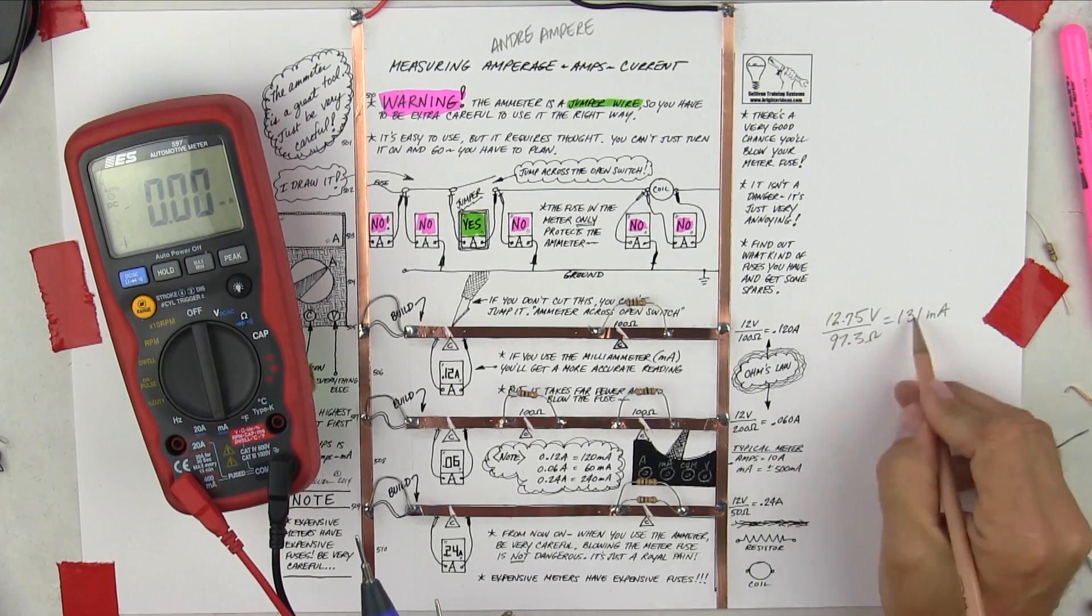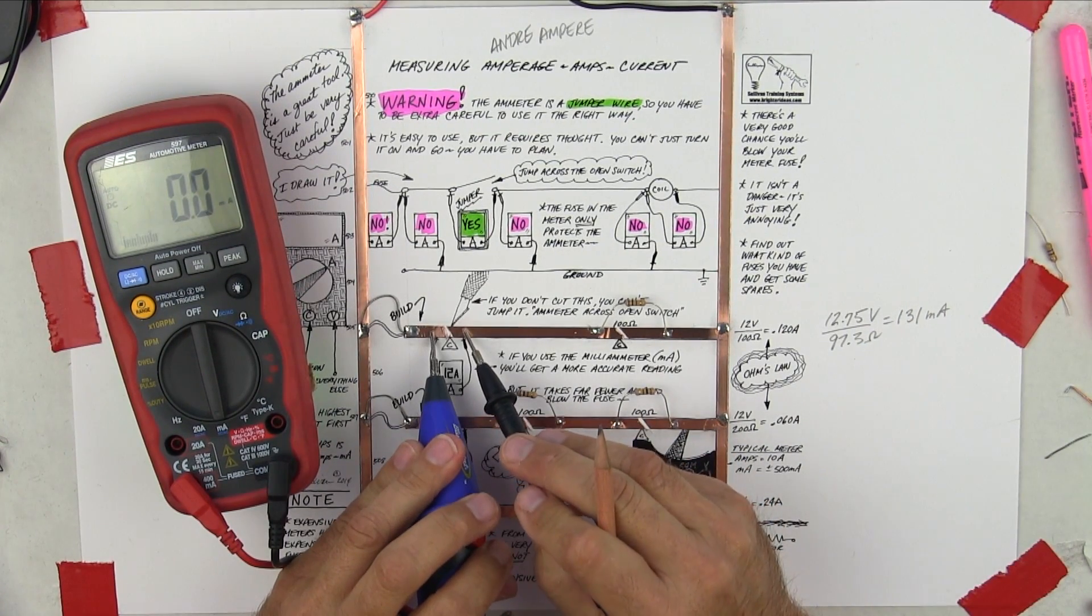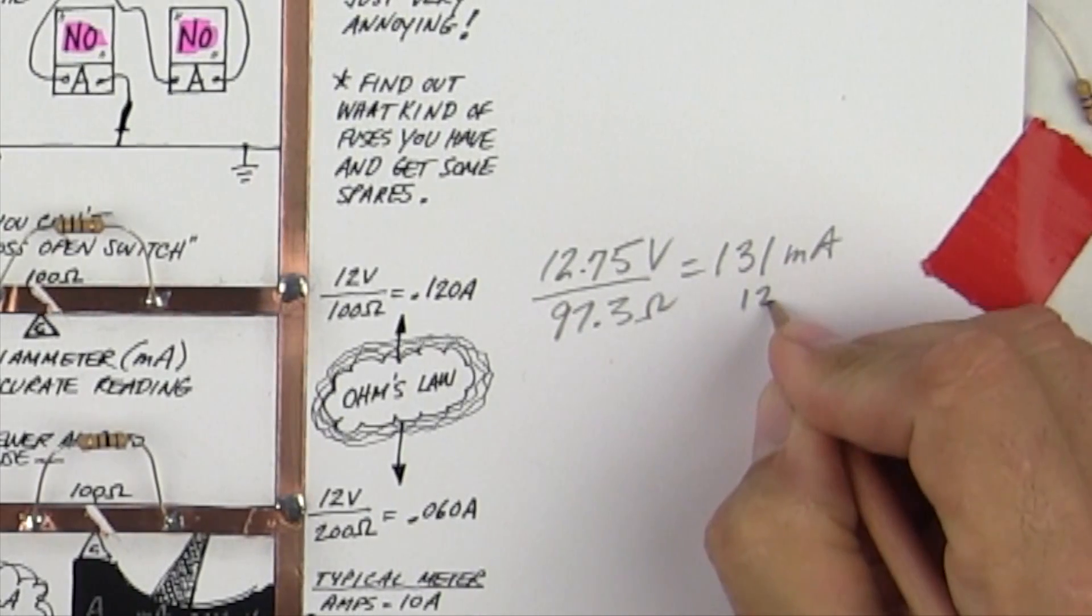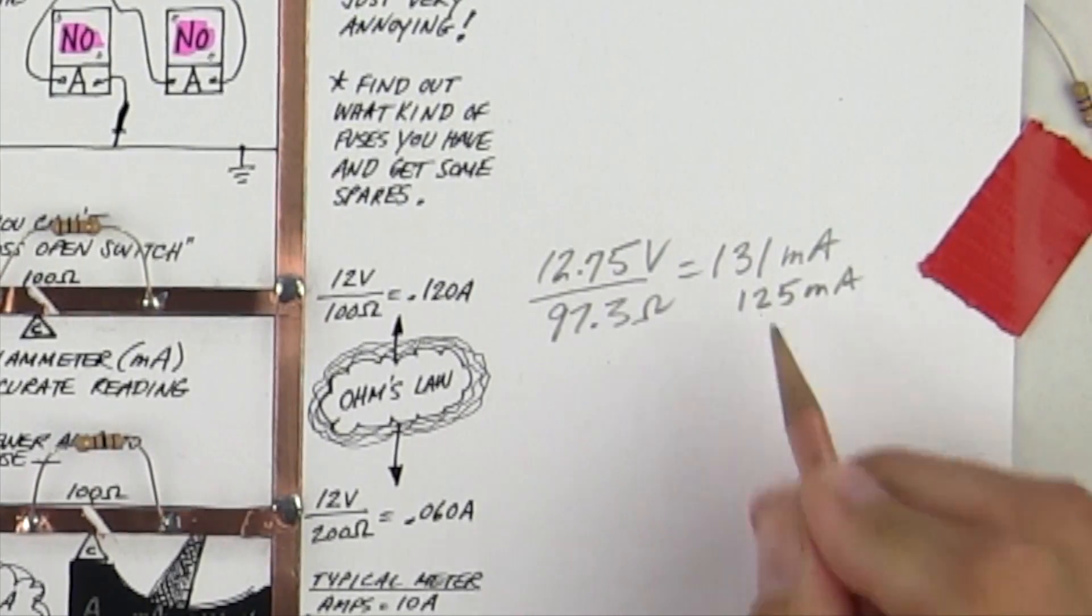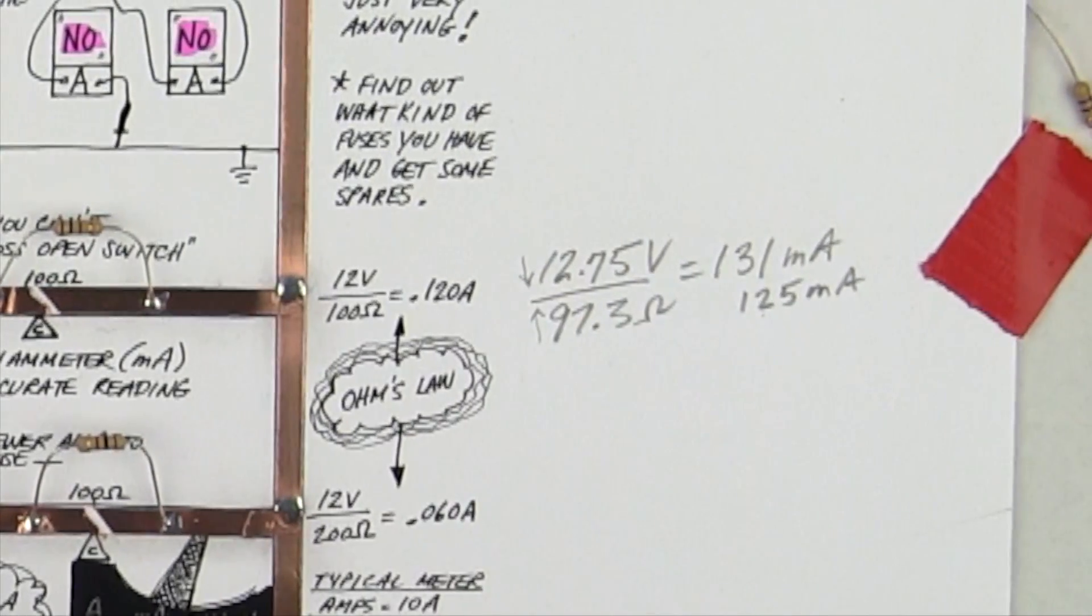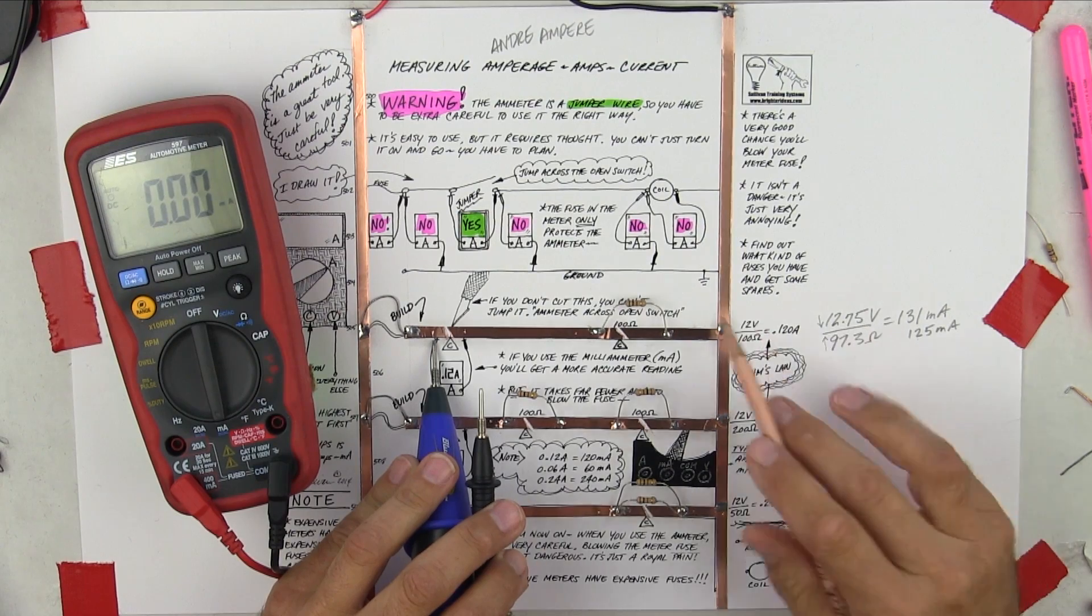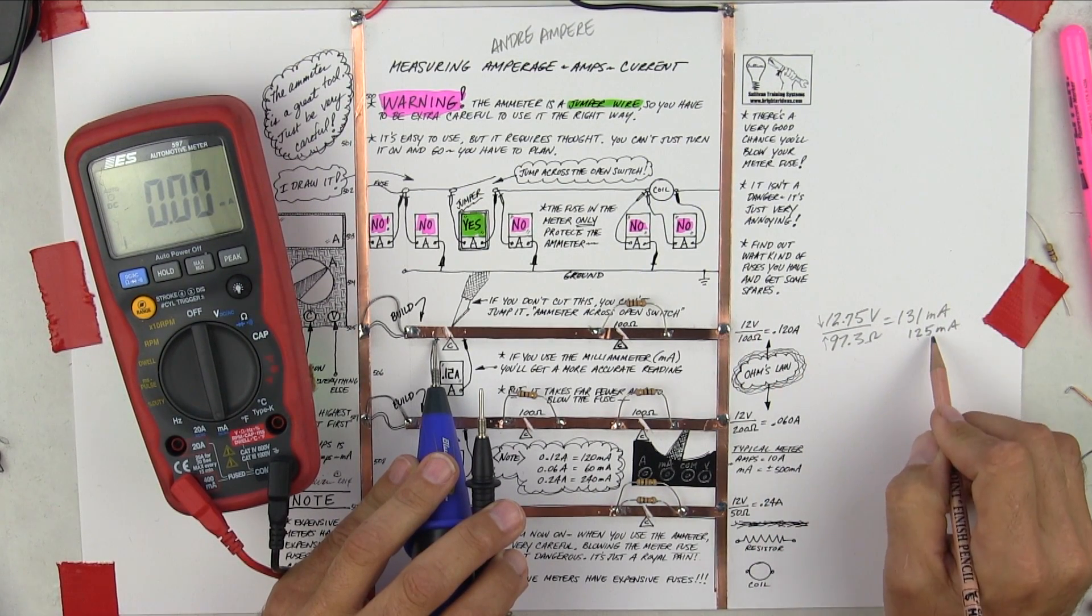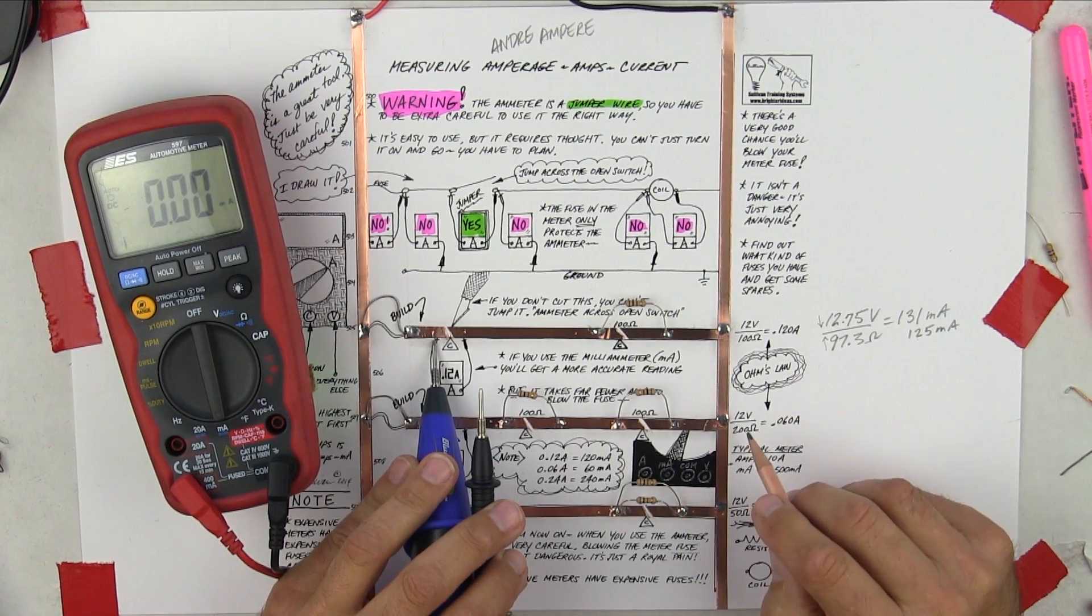131 milliamps. But a couple of things are happening here. Our number was actually lower. What was our number? 125. So the lesson here, the very important lesson is that something is making this number less. And it's either more of this or less of this. So I'm going to guess it's probably less voltage because the battery's probably getting a little weaker. So I would guess that my numbers are, my voltage numbers are off a little bit.